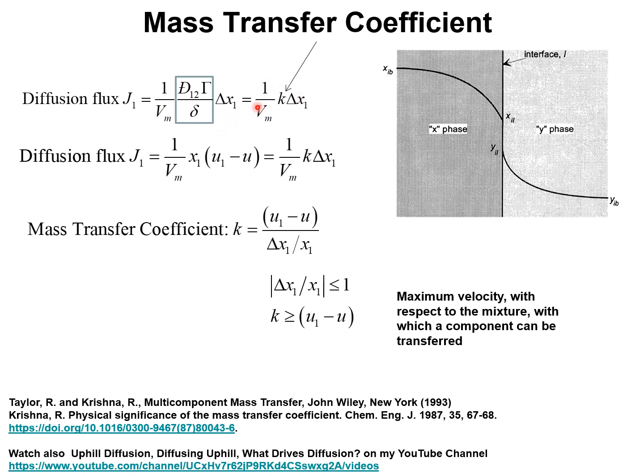From this expression for the mass transfer coefficient, we can equate these two expressions for the diffusion flux. And we derive the expression for the mass transfer coefficient in terms of the difference in the velocity of component 1 with respect to the mixture divided by the driving force for component 1 divided by the mole fraction of component 1 in the bulk phase.